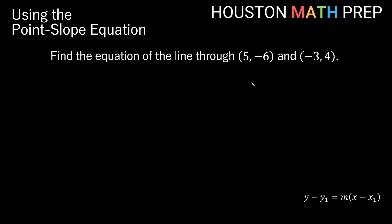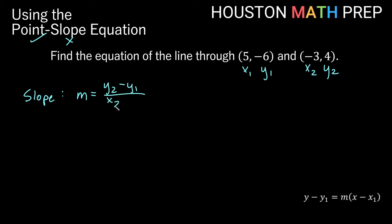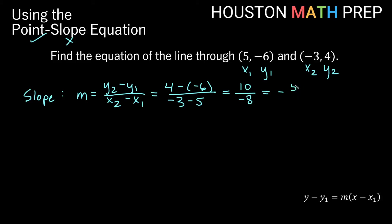Let's look at one more with some fraction action in it. We want to find the equation of the line through 5 comma negative 6 and negative 3 comma 4. Again we have two points and no slope, but we can get a slope because we have two points. For slope: m equals y2 minus y1 over x2 minus x1. In this instance y2 minus y1 is 4 minus negative 6, and x2 minus x1 is negative 3 minus 5. The minus negative on top is like plus, so 4 plus 6 gives us 10, and on the bottom negative 3 minus 5 gives us negative 8. So we get a negative slope, and 10 over 8 reduces by 2 to give us negative 5 over 4. That'll be the m we use.